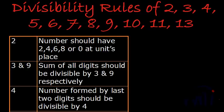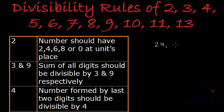First is divisibility rule of 2. As all of you know, a number divisible by 2 is an even number. The divisibility rule of 2 says the number should have 2, 4, 6, 8, or 0 at unit's place. Any number which has 2, 4, 6, 8, or 0 at unit's place will be an even number and it will be divisible by 2. So numbers like 24, 28, 52, 50, or 96 — all these numbers will be divisible by 2.